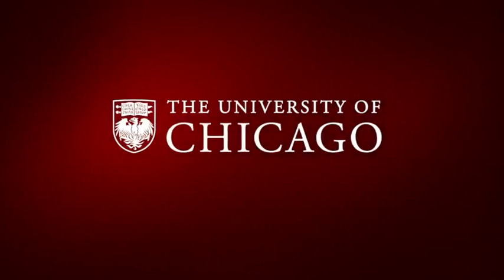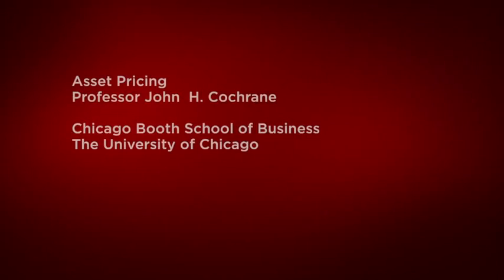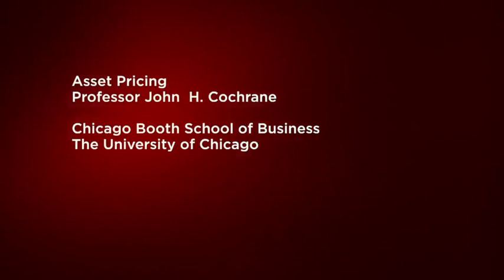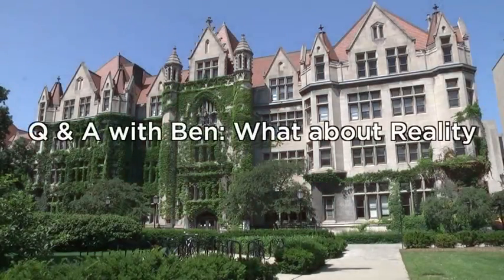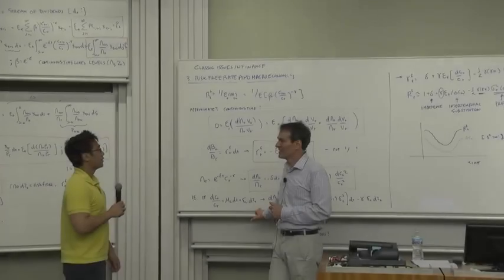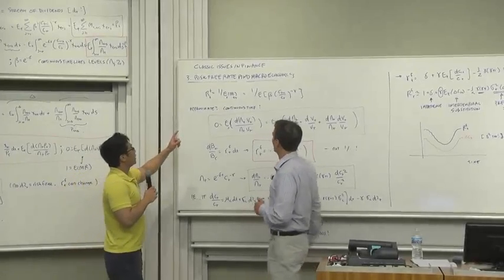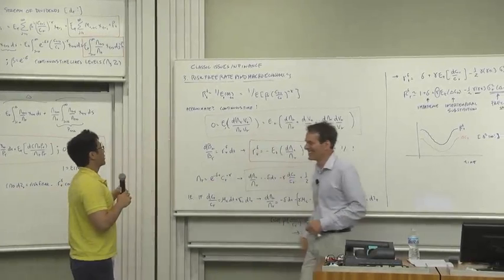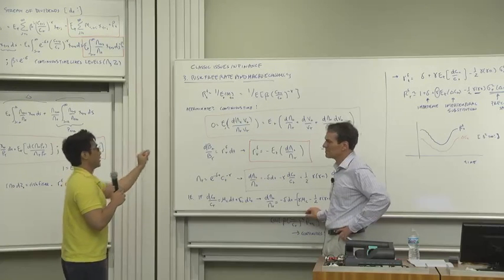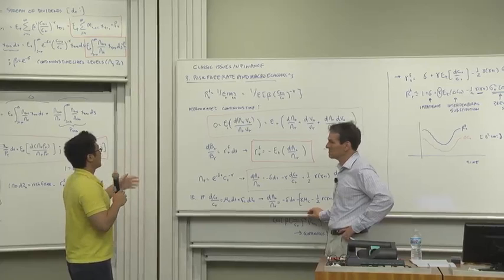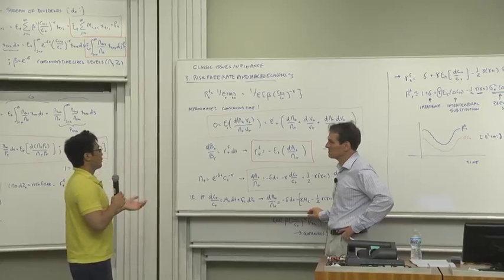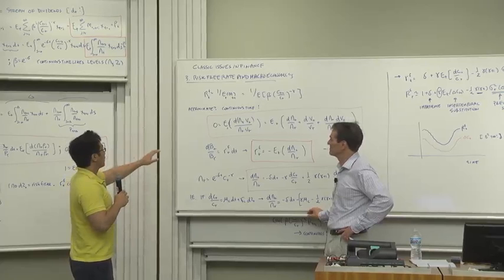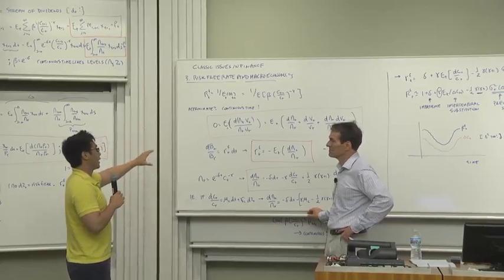All right, so in real life—what do you mean real life? This is real life. Okay, go ahead. If I purchase a stock, dividend payouts aren't, you know, every single instant in time, so in that sense X is a discrete process. But what we're doing here is we're taking the continuous time analog to sort of approximate this discrete process.